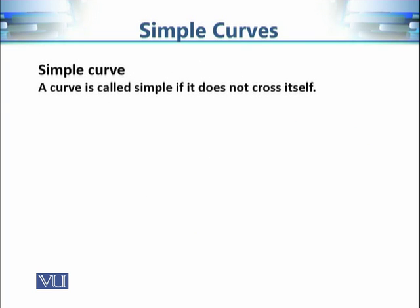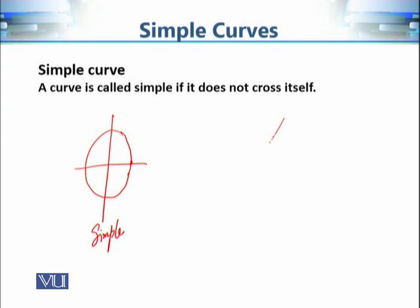A curve is called a simple curve if it does not cross itself. For example, a circle does not cross itself, so it is a simple curve. But if a curve crosses itself at some point, it is not simple.